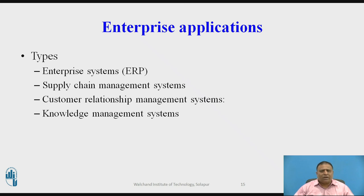Customer relationship management systems provide information to coordinate all the business processes that deal with customers in sales, marketing, and service, in order to optimize revenue, customer satisfaction, and customer retention. They integrate the firm's customer-related processes and support customer information from multiple communication channels, for example telecommunications, email, and Wi-Fi devices.